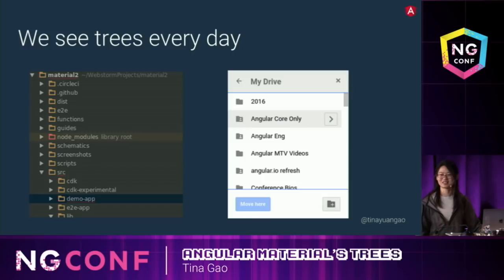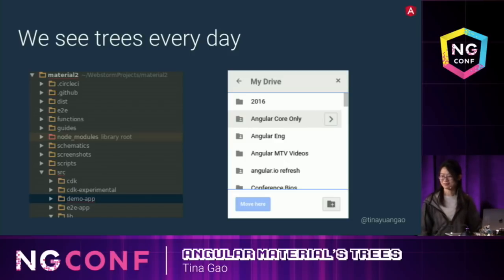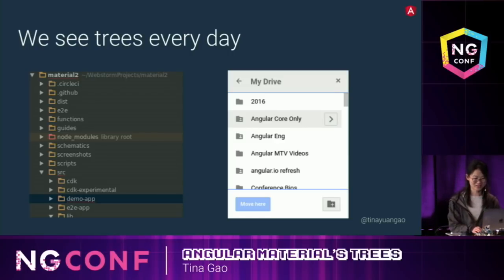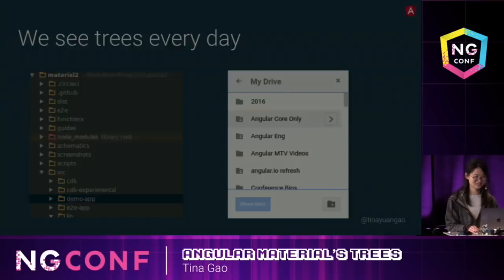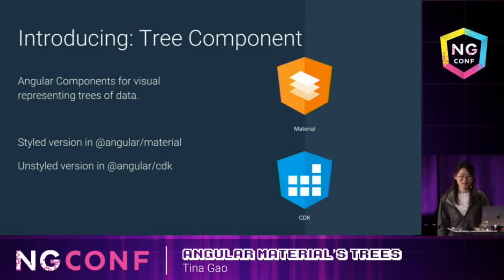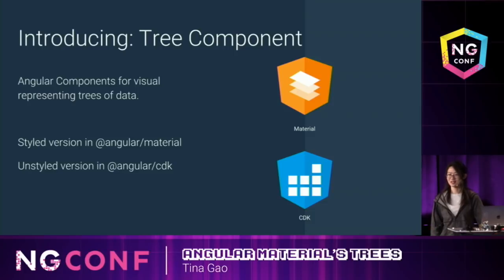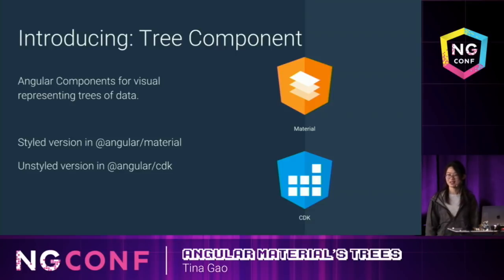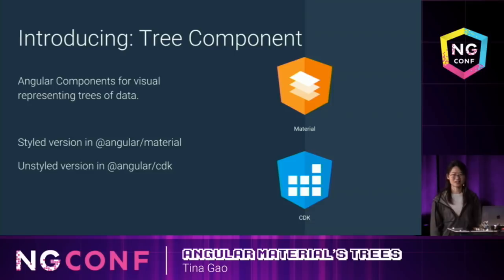We see trees every day. For example, the file system in our project, or the files on Google Drive. We can expand the folder and see what's inside it. Maybe there's another folder. So now let me introduce the tree components. It's for visually representing trees of data. We have a version that follows material design specs in Angular Material. If you have your own design specs, you can also use the unstyled version in Angular CDK. Both MaterialTree and CDKTree will be released in our sixth version.